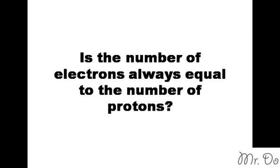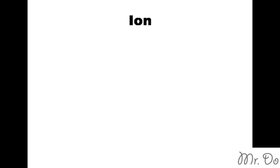When it's not neutral, it can either be positively charged or negatively charged. When an atom is not neutral and is negative or positively charged, it's called an ion.